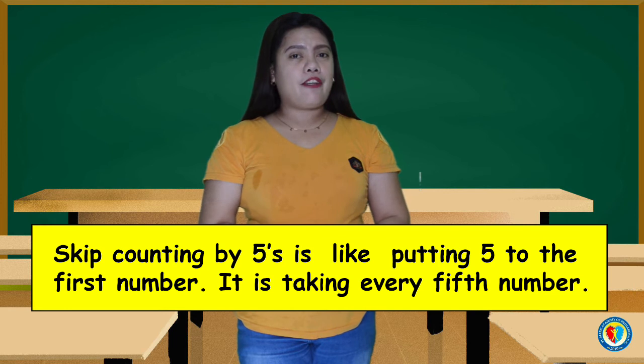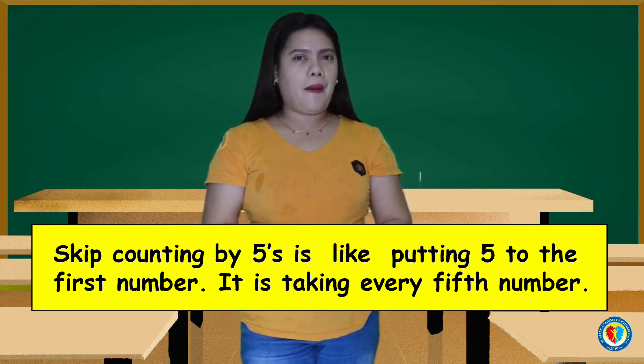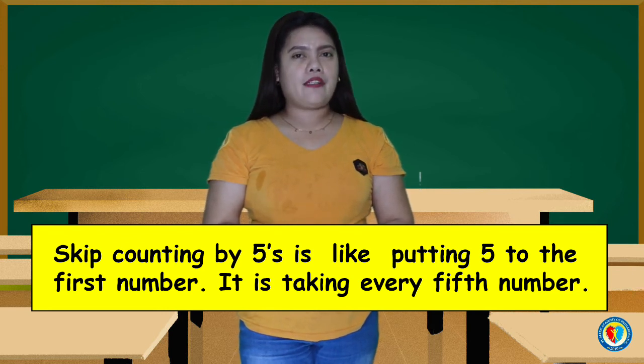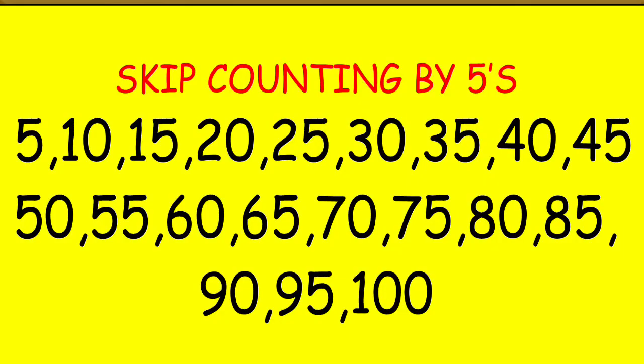Skip-counting by 5's is like putting 5 to the first number. It is taking every fifth number. Let's count: 5, 10, 15, 20, 25, 30, 35, 40, 45.